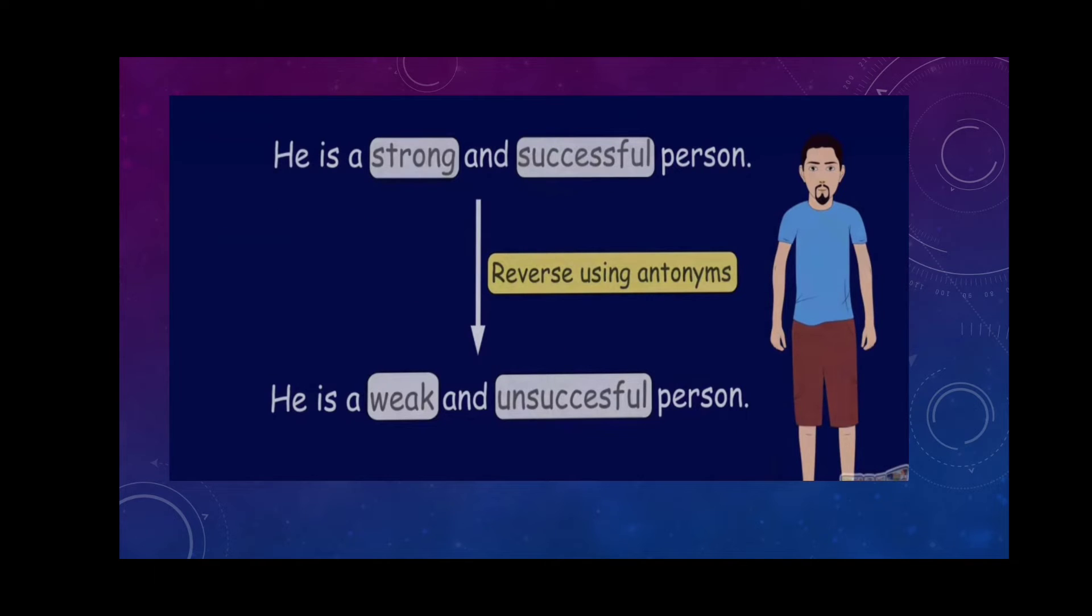Next example: He is a strong and successful person. We will reverse using antonyms. Write its opposite: He is weak and unsuccessful person. Strong opposite is weak and successful opposite is unsuccessful.